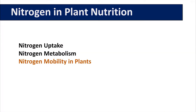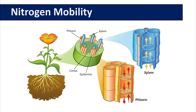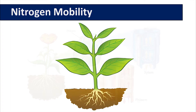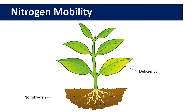Nitrogen mobility in plants: once nitrogen is taken up into the plant, it is translocated in the xylem to where it is needed. However, if there is insufficient nitrogen available in the soil, or if damage or pathogens are present in the root system causing limited nitrogen uptake, plants can re-mobilize nitrogen by breaking down proteins in older leaves and move that nitrogen up into the younger leaves or actively growing parts of the plant where nitrogen is needed.